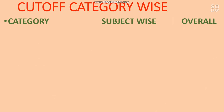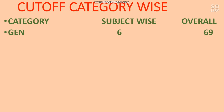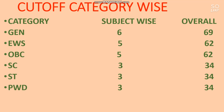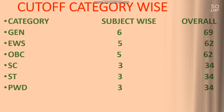Here is the cutoff — subject-wise and overall — you need to score to clear the JEE Advanced cutoff. For General category: 6 marks subject-wise and 69 marks overall across Paper 1 and Paper 2. For EWS: 5 marks subject-wise and 62 marks overall. For OBC: same — 5 marks and 62 overall. For SC: 3 marks subject-wise and 34 marks overall. For ST: same as SC. For PwD: same marks apply as well.